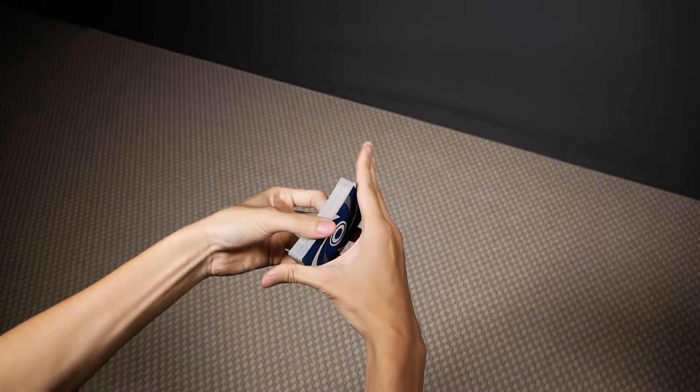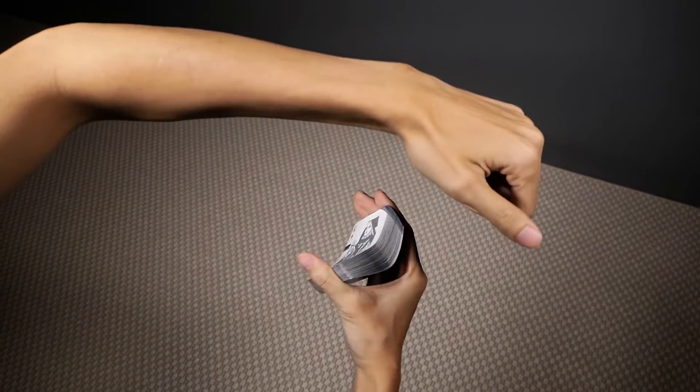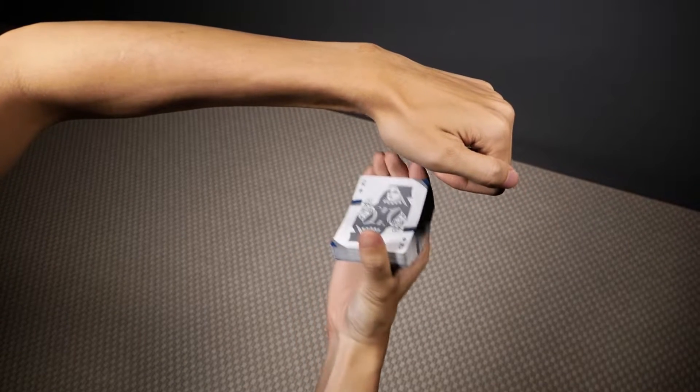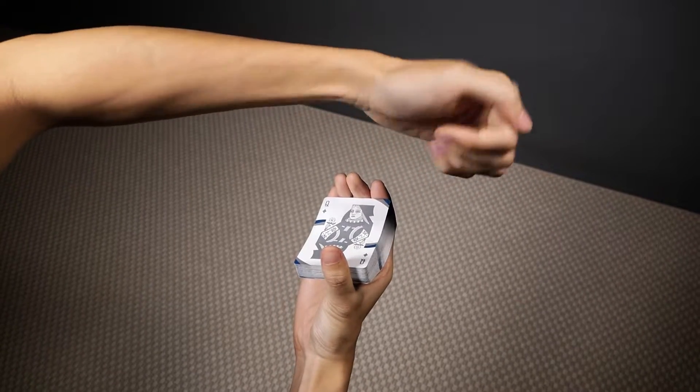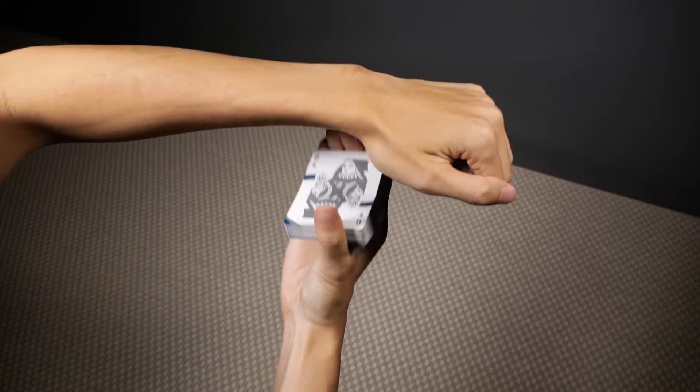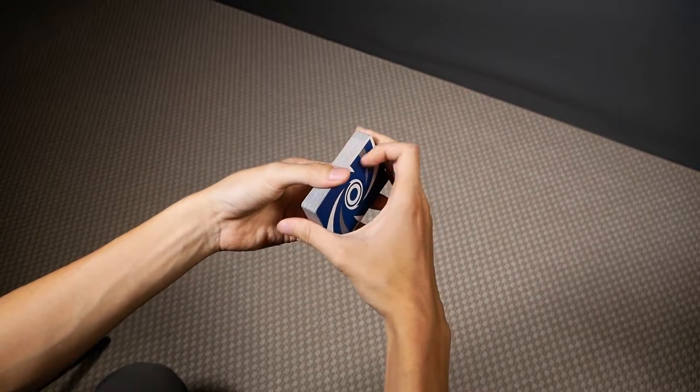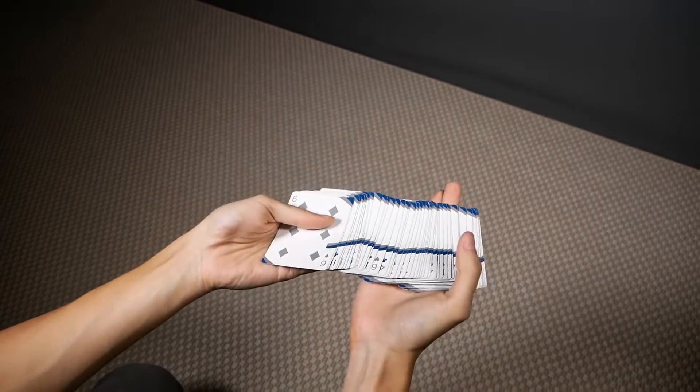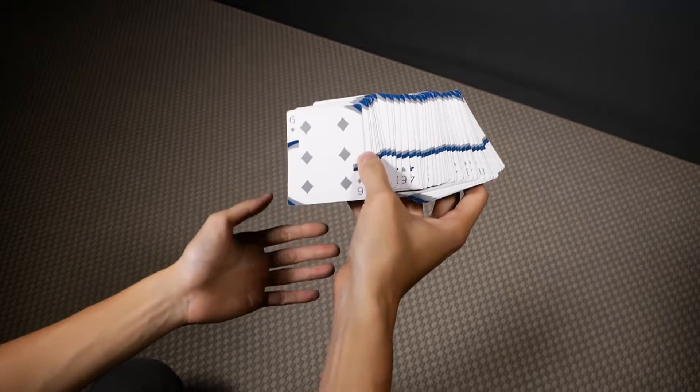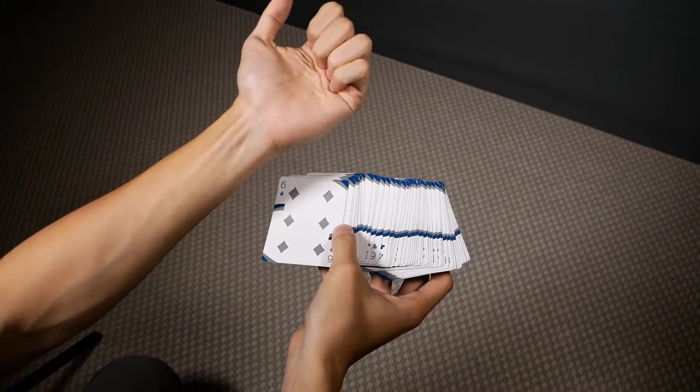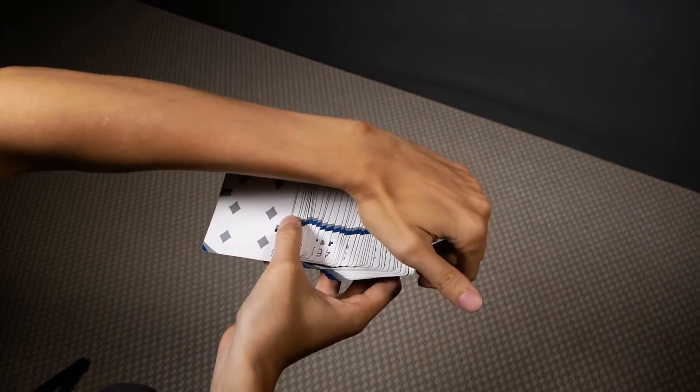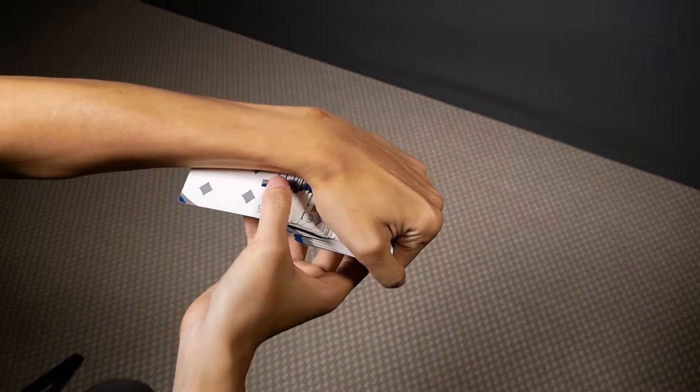Once you have your left hand in place, you want to do the waterfall with your right hand around this position here under the wrist of your left hand. As you do the waterfall, the cards should naturally spread out and move upwards, and you want to catch these cards by clamping it with these four fingers as soon as it contacts your left palm.